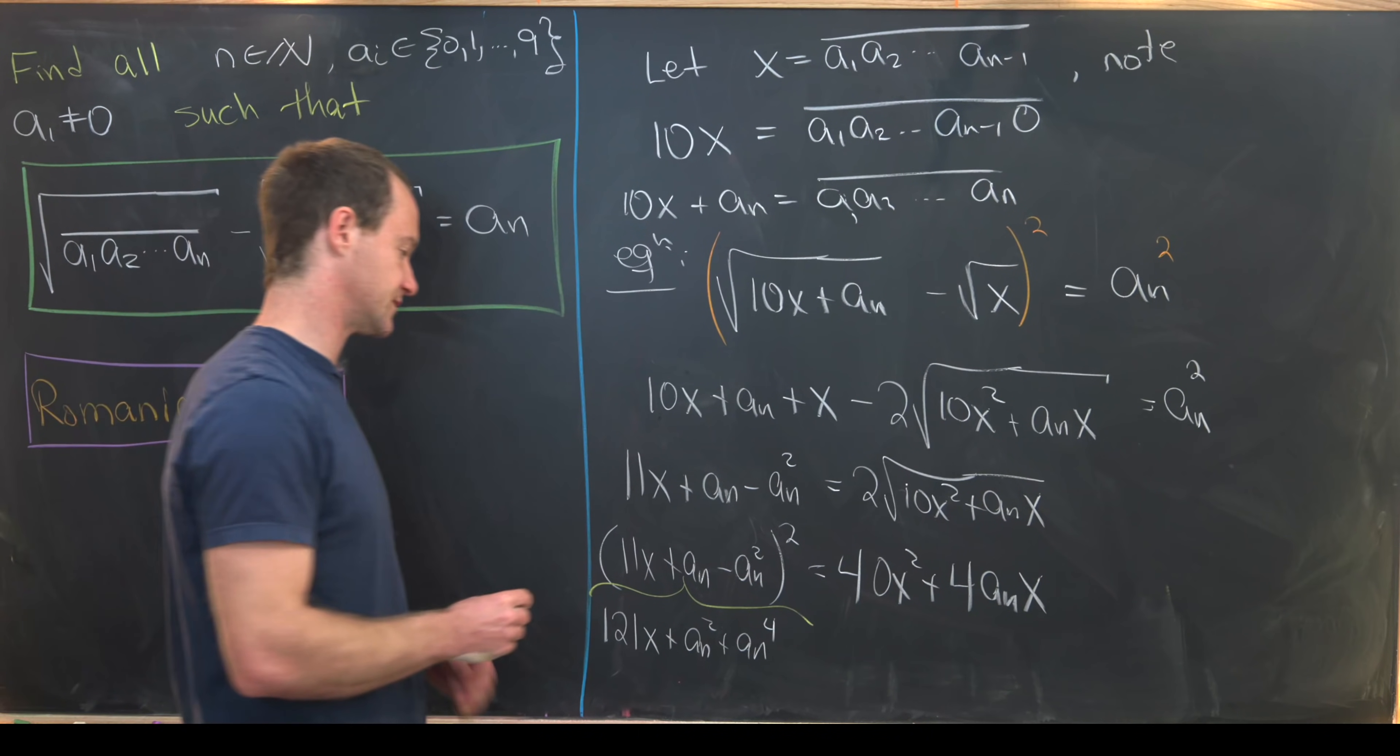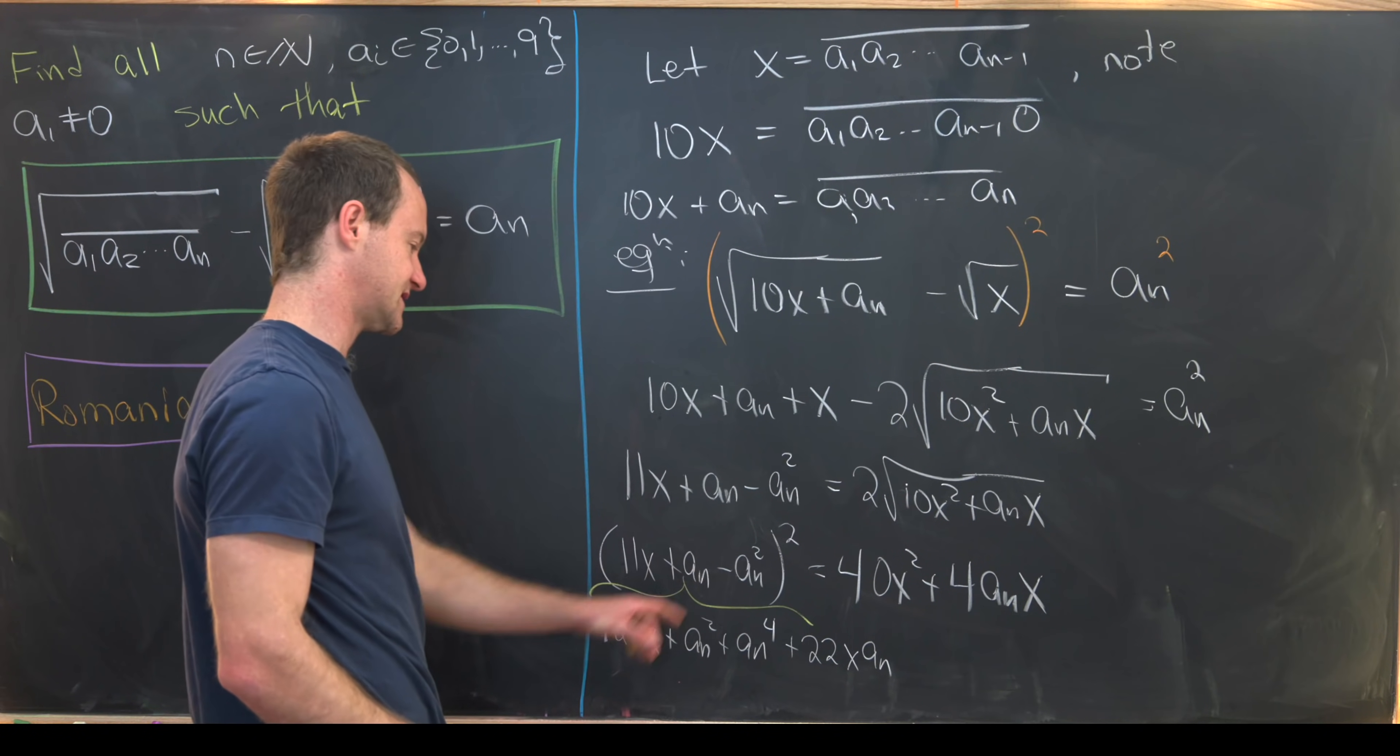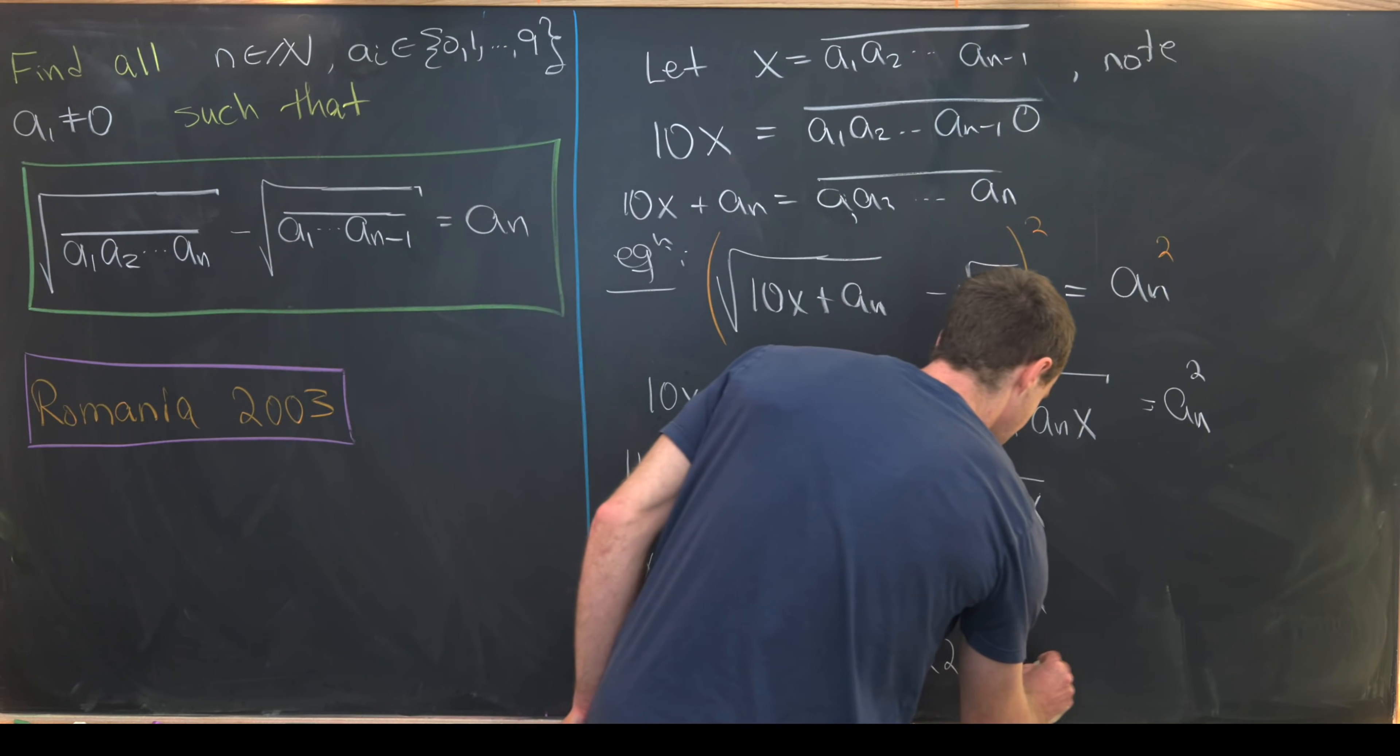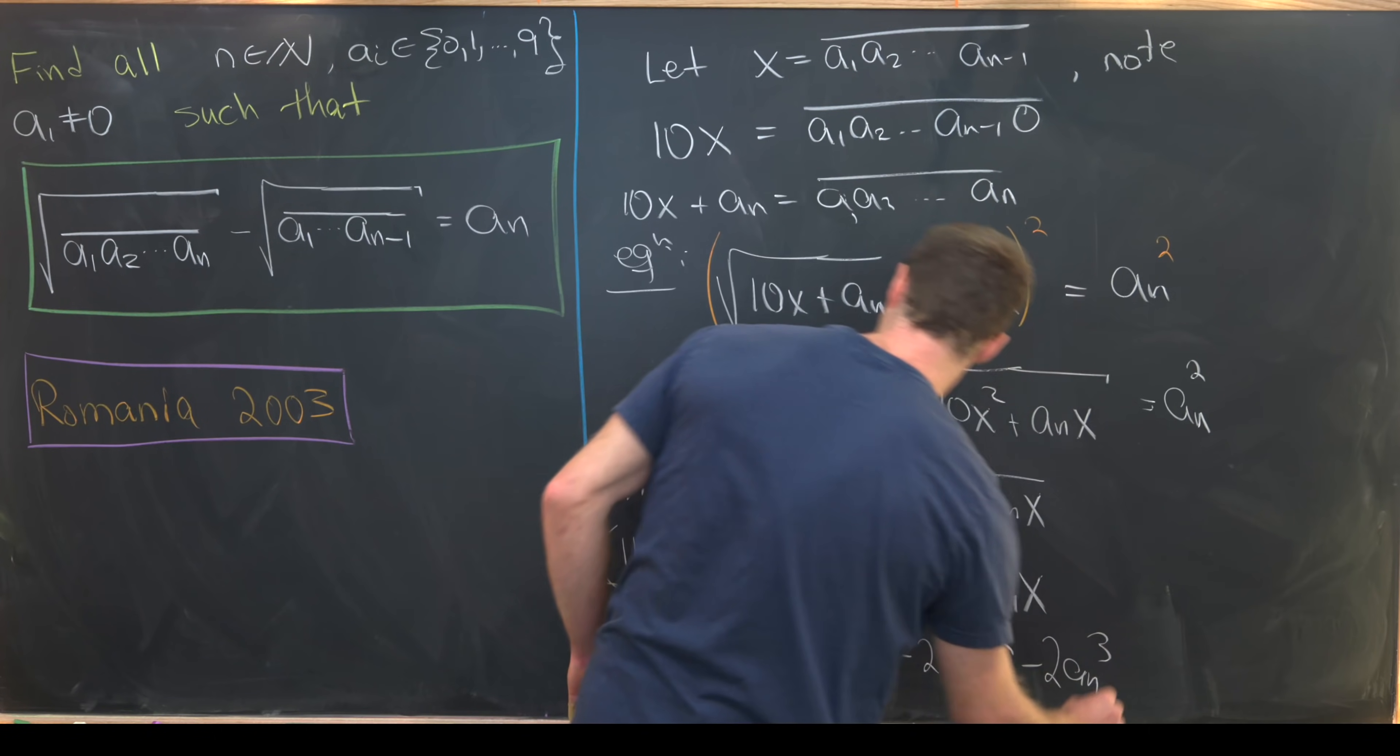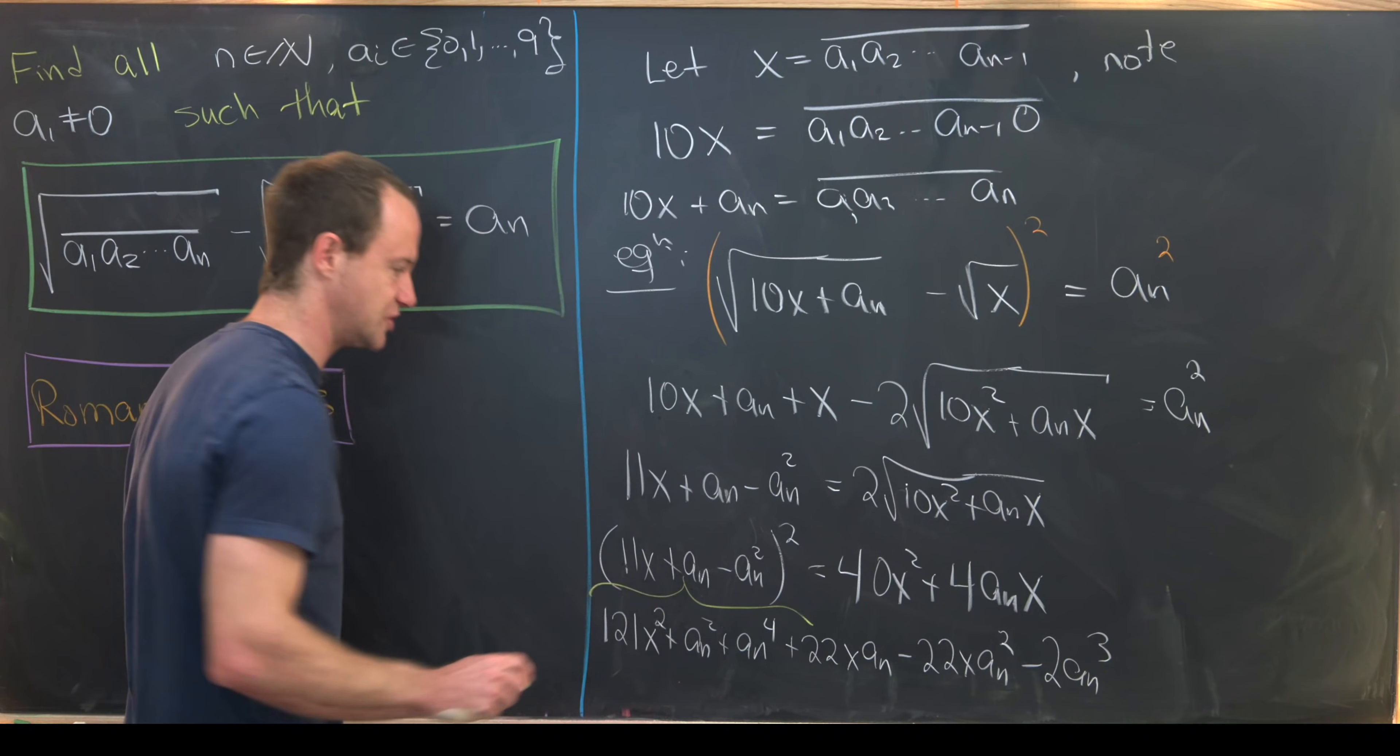And then we'll have our cross terms. So we'll have plus 22x times an, so that'll be like this times this, minus 22x times an squared. That's like this term times this term, and then minus 2an cubed. So that'll be like this term times this term. And I just realized I made a mistake here. That should be a square.